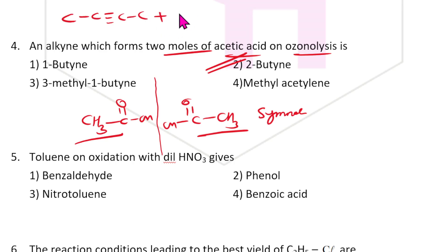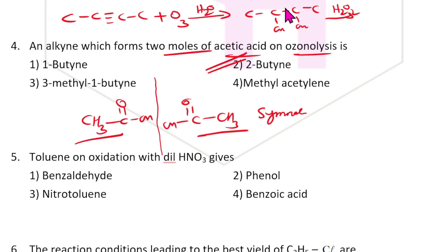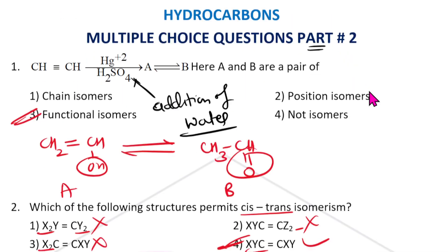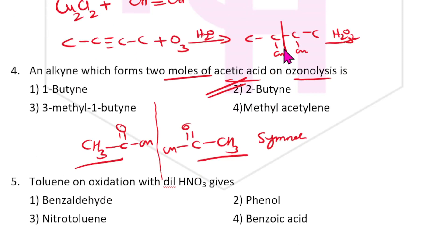With two moles of ozone added to 2-butyne, remember two moles of acetic acid should form. First it will form C-C-OH-C-OH-C intermediate, then react with H2O2 and H2O, and finally you get C=O-H and C=O-H — two acetic acid molecules.